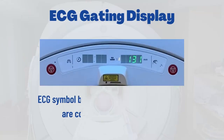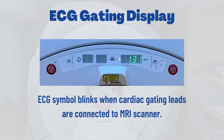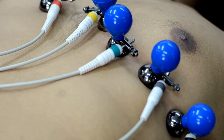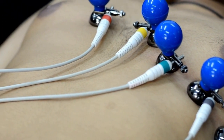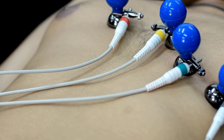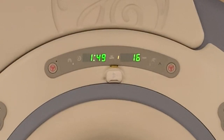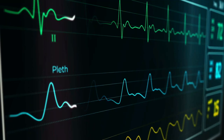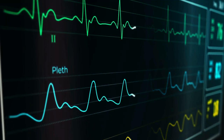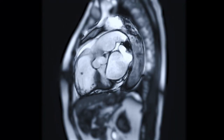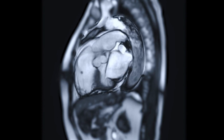The last LED indicator is the ECG lead display. This simple LED indicates strength and return signal of the cardiac gating leads. It blinks when electrocardiogram leads are connected to the MRI. The ECG leads monitor patient cardiac patterns to synchronize MRI scans with the patient heartbeat.